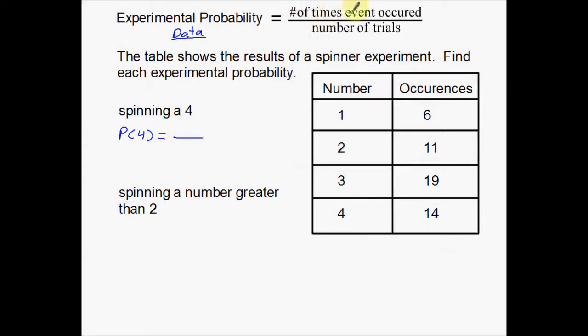So what we're going to do is we're going to use experimental probability. We're going to use the number of times the event occurred over the number of trials. So in this case, 4's. How many times did the 4's occur? 4's occurred 14 times over a total of how many trials?